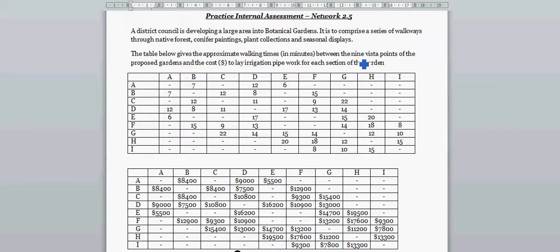A district council is developing a large area into a botanical garden. It is to comprise a series of walkways through native forests, conifer plantings, plant collections, and seasonal displays. So there are two tables here. This first table gives the approximate walking time in minutes between nine vista points of the proposed garden and the cost in dollars to lay irrigation pipe work for each section of the garden.